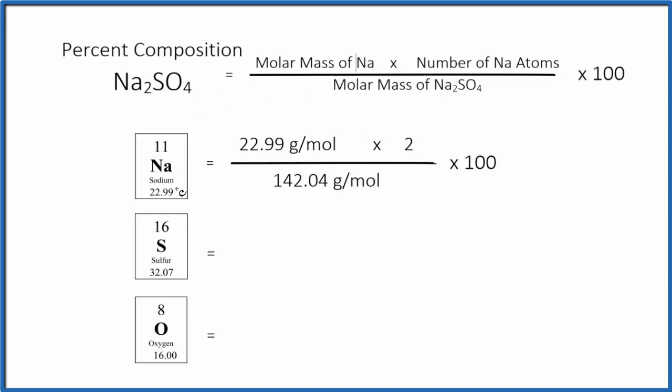And we can find that right here, 22.99 units or grams per mole. Then we multiply that by the number of sodium atoms. We have two sodium atoms. So we've got 22.99 times 2.